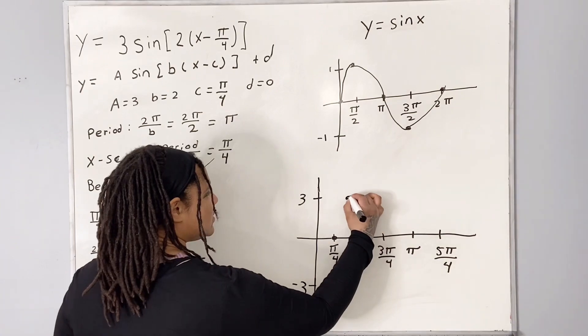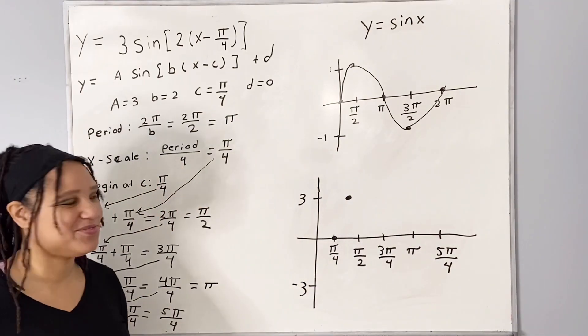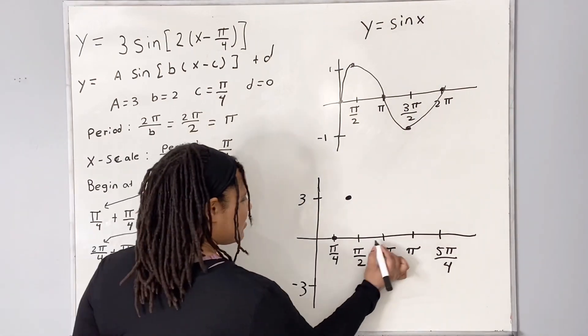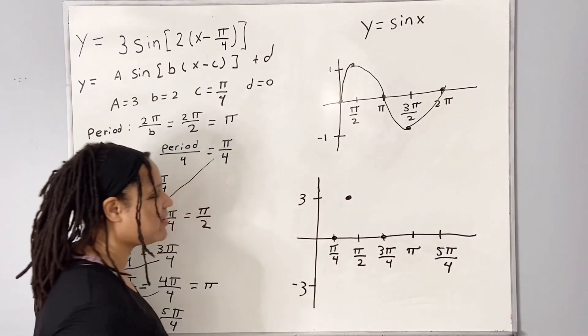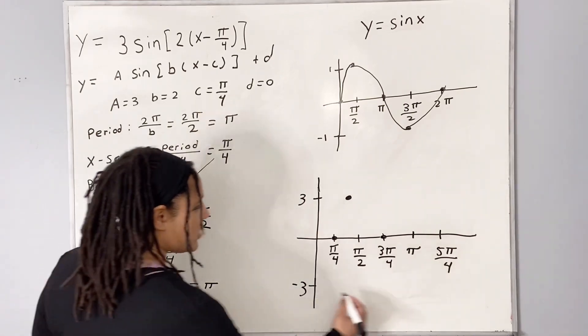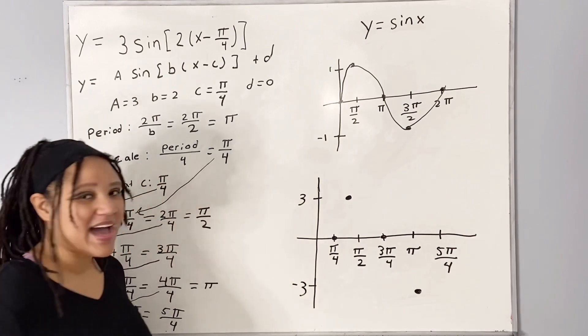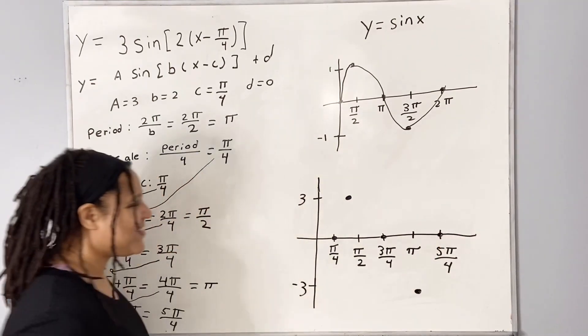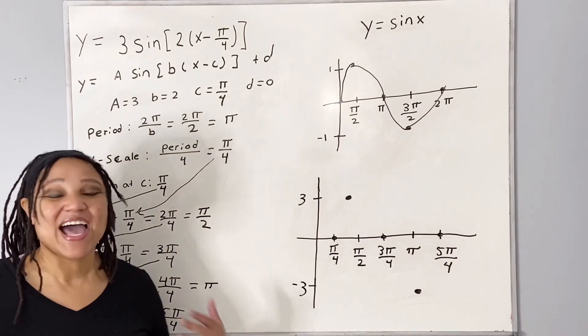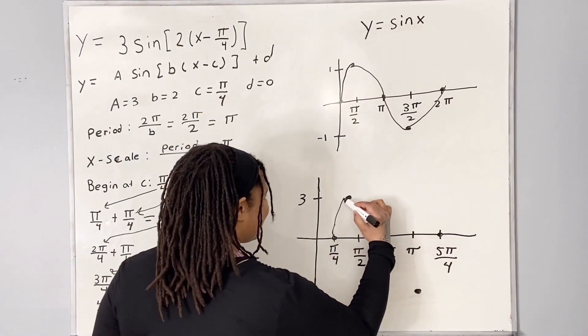And then the next increment over, we are going to put it back at 0. And at pi, we are going to go at negative 3. And at 5 pi over 4, we're going to go back at 0. And so then all we're going to do is connect the dots. So our graph will look like that.